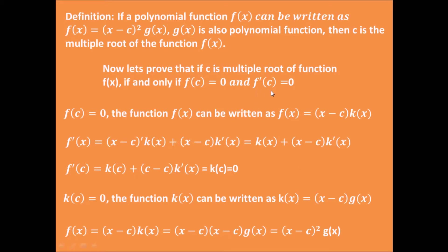Now the derivative at point c equals zero, then we will have this expression, which means the function k at point c also equals zero. Therefore, k(x) can be written as (x minus c) times another function g. Then we can substitute this k(x) back, and we get f equals (x minus c) squared times g.